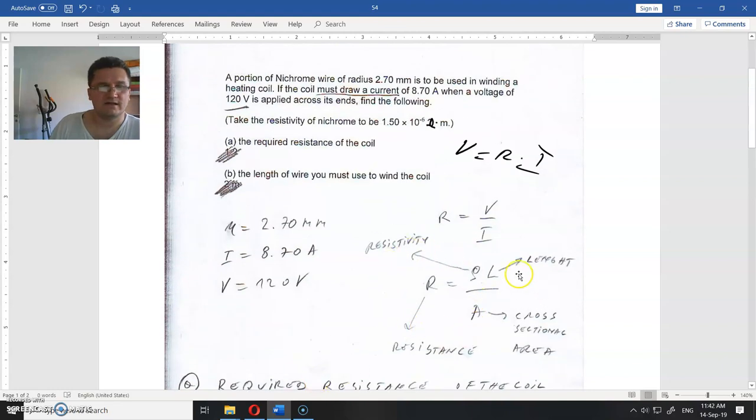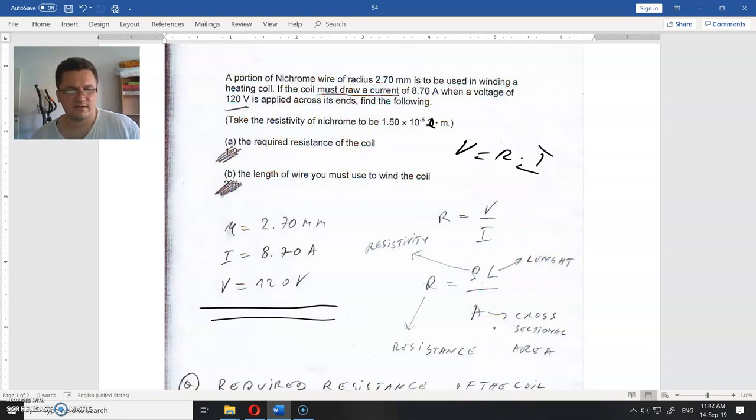Now, this is the equation for that resistance. R is the resistance, ρ is the resistivity, L is the length, and A is the cross-sectional area. So for any kind of conductor - this is a wire in this case.